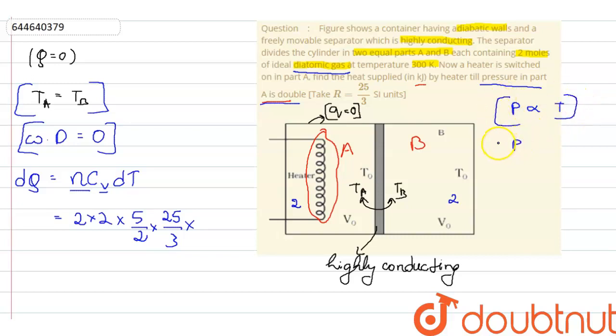If pressure is doubled, then temperature is also doubled. That means the final temperature is 2T0 and initial is T0.